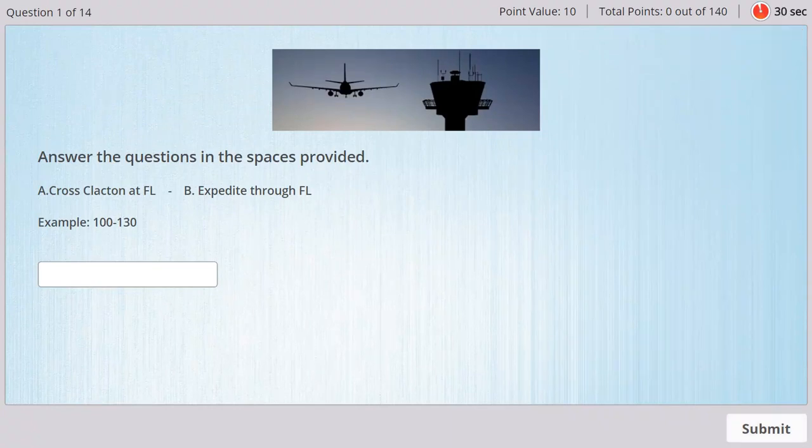KLM 316 London commence your descent across Clacton at flight level 170, expedite through flight level 210. 316 Roger, flight level 170 at Clacton will expedite through 210.